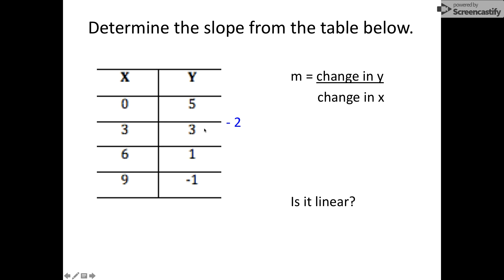To go from 5 to 3, we subtracted 2. To go from 3 to 1, we subtracted 2. To go from 1 to negative 1, we subtracted 2. Again, this is constant rate of change, so that should be an indication of whether it's linear or not.